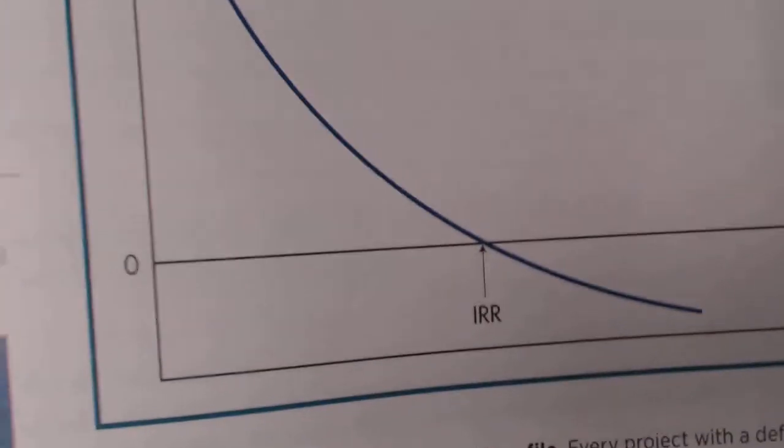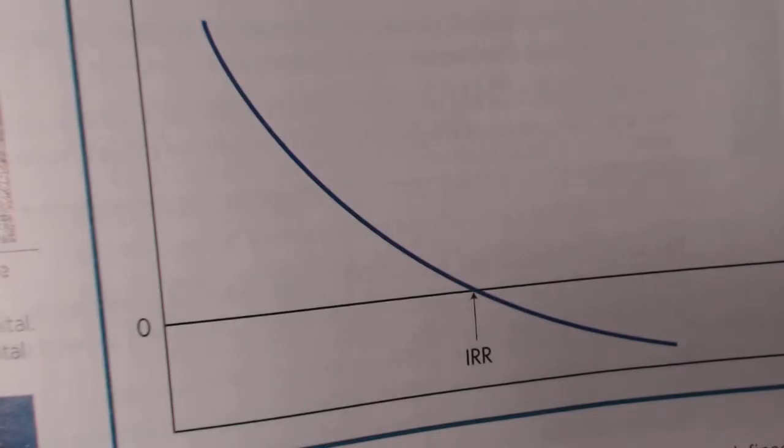Basically what we're trying to do in this particular problem is we are trying to get the IRR to be equal to 0 or the closest we can to 0. And the internal rate of, this is called the internal rate of return.